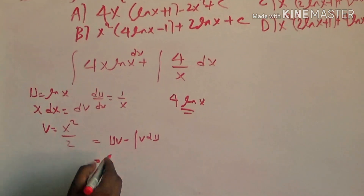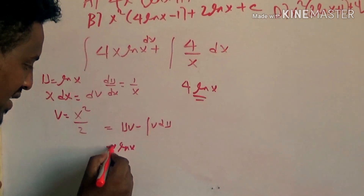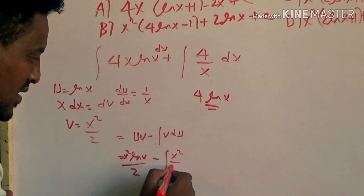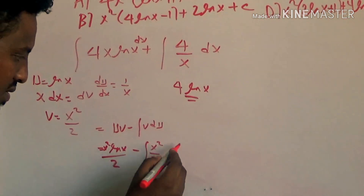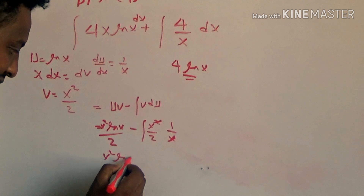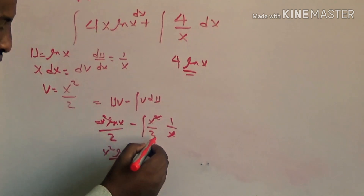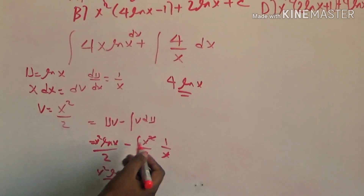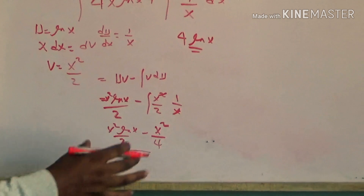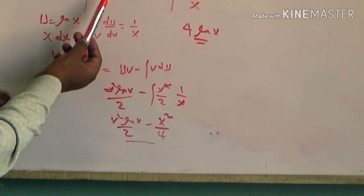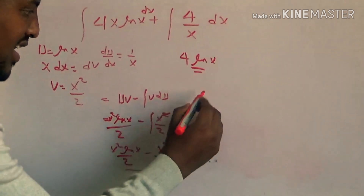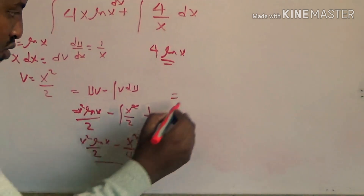Using integration by parts: the formula is uv minus the integral of v du. Here u equals ln(x), du equals 1/x dx, and v equals x-squared over 2. So we get x-squared ln(x) over 2, minus the integral of x-squared over 2 times (1/x) dx. That gives x-squared ln(x) over 2 minus x-squared over 4, plus constant.